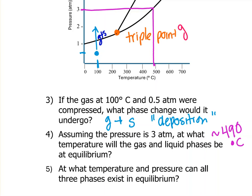That's where you can have all three at equilibrium, so it looks like about 1.5 atmospheres, and maybe 230 degrees C.